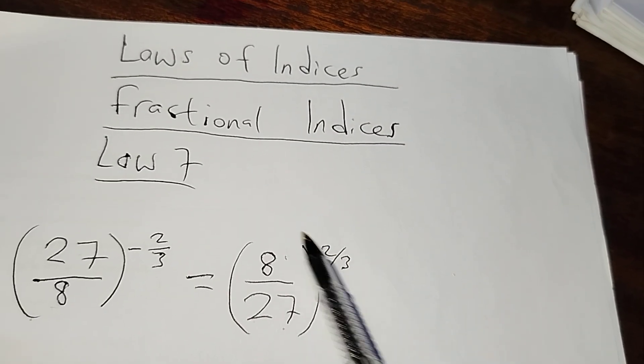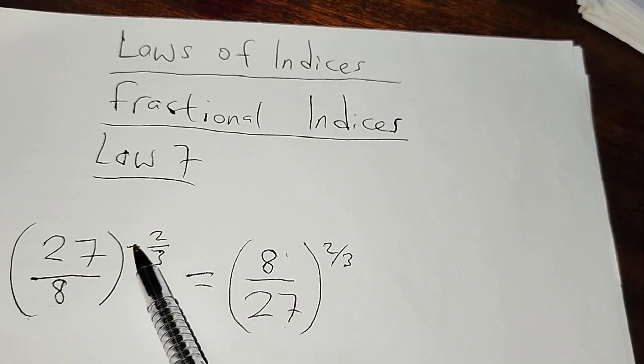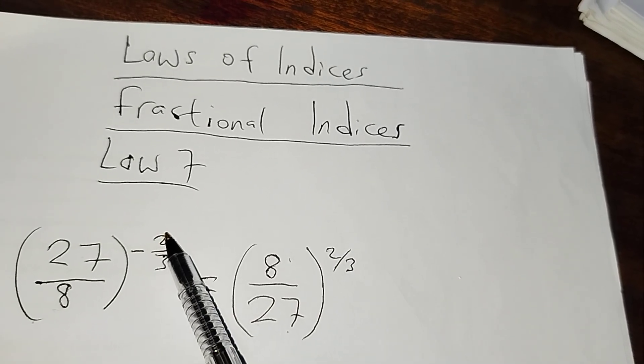I just removed the minus sign and it remained as 2 over 3. If you check, you can see that 2 remains at the top and 3 at the bottom.